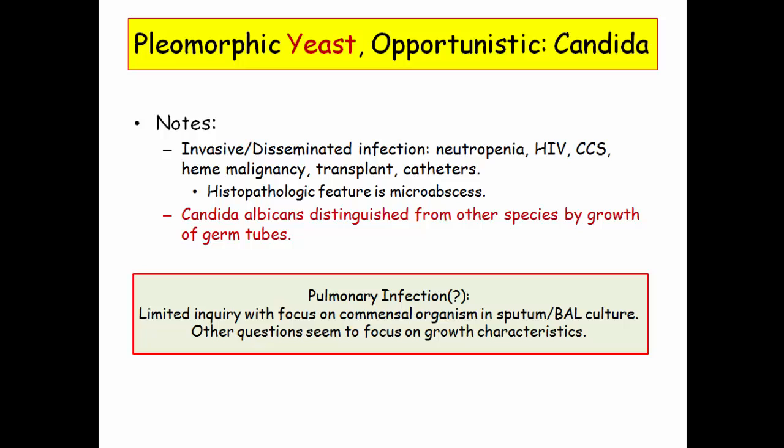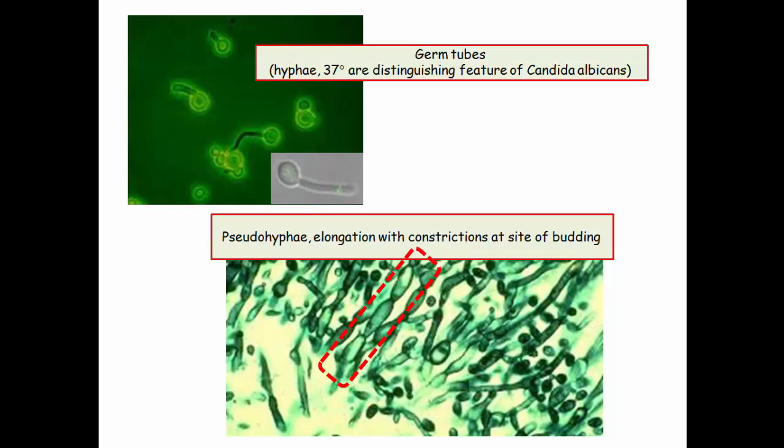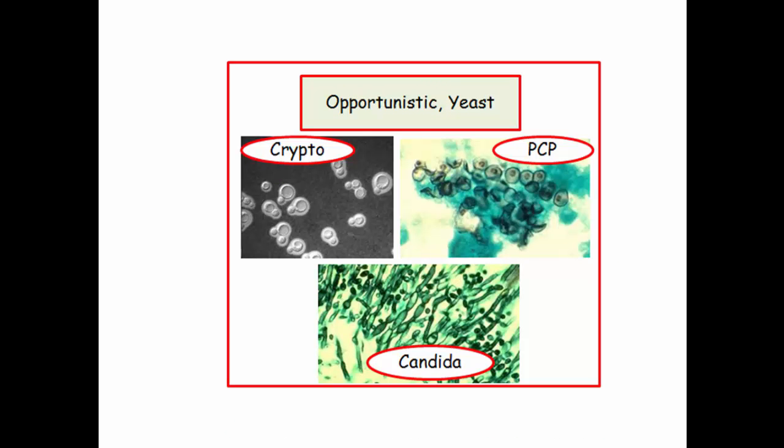Listed are the immunocompromising conditions, including the use of IV catheters. Micro-abscesses are the histopathologic description of invasive candidal infection. Finally, unless given a pathologic specimen demonstrating tissue invasion, be on the lookout for questions describing candida as a colonizer, especially if seen in sputum or bronchoalveolar lavage specimens. Here are images of the germ tubes — the true hyphae of candida — and pseudohyphae showing those sites of constriction to distinguish them from true septa.